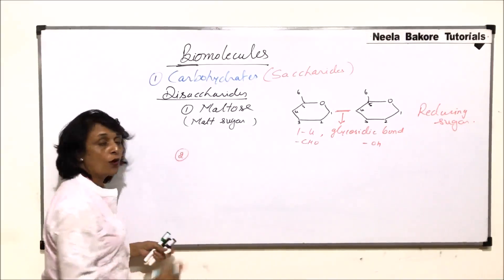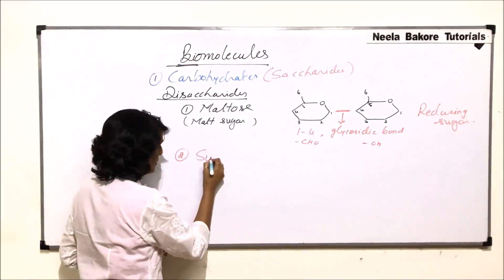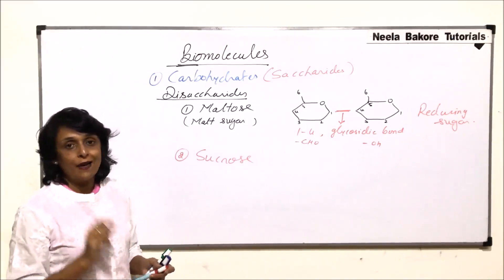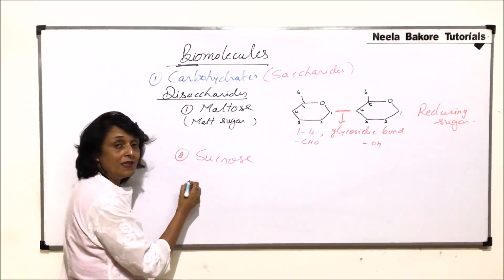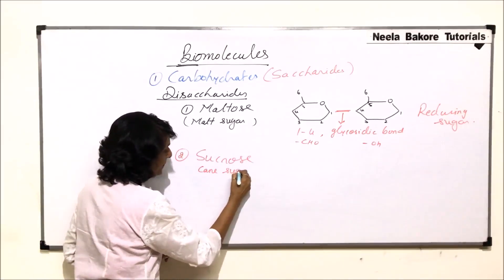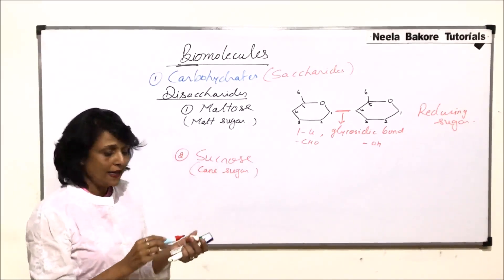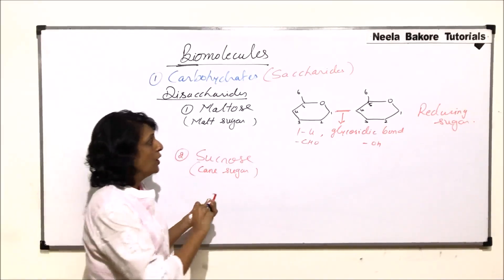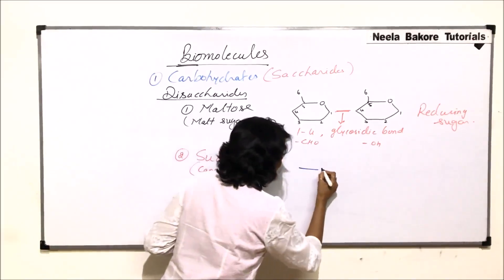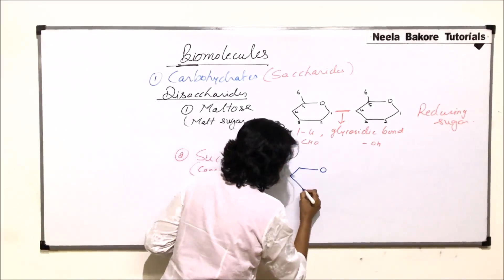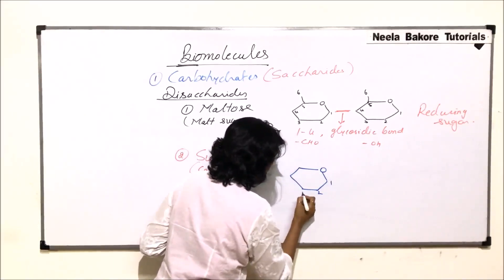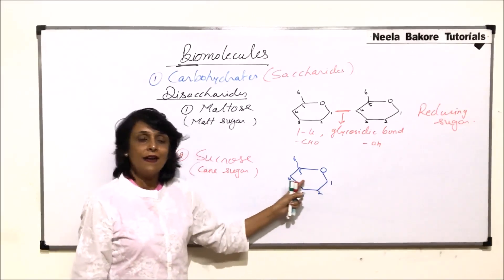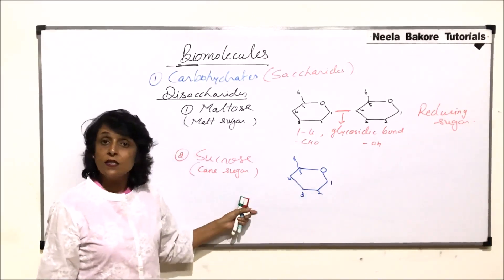The next disaccharide we are talking about is sucrose. Sucrose is a disaccharide made up of one glucose and one fructose, and it is commonly known as cane sugar — obtained from sugar cane. The glucose molecule forms a hexagonal ring, with carbons numbered 1, 2, 3, 4, 5, and 6, where the bond is formed between carbon 1 and 5. That's why this structure is the pyranose ring.